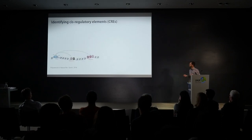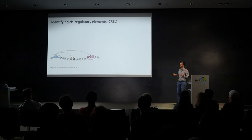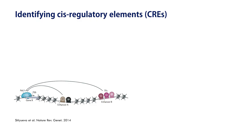Cis-regulatory elements such as enhancers and promoters are regions in the genome that contain short sequences recognized by transcription factors that bind to them and in turn activate the expression of adjacent genes. The same target gene can be regulated by different enhancers and different transcription factors in various cell types and developmental stages.